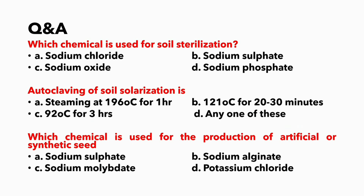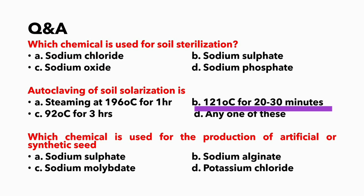We have completed Chapter 7 and part of Chapter 8. Now we are entering into important questions and answers. Which chemical is used for soil sterilization? Option C — sodium oxide — is the correct answer. Autoclaving of soil solarization is at option B: 121 degrees Celsius for 20 to 30 minutes. Which chemical is used for the protection of artificial or synthetic seeds? Option B — sodium alginate — is the correct answer.